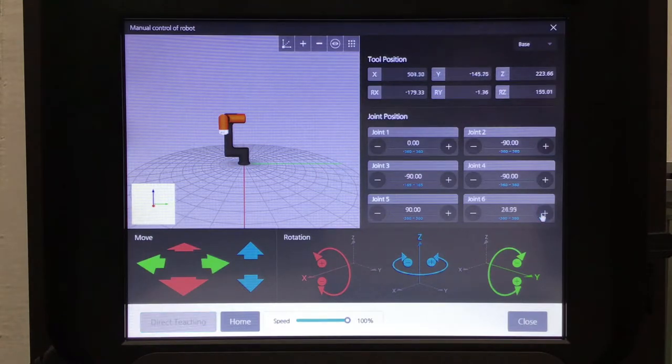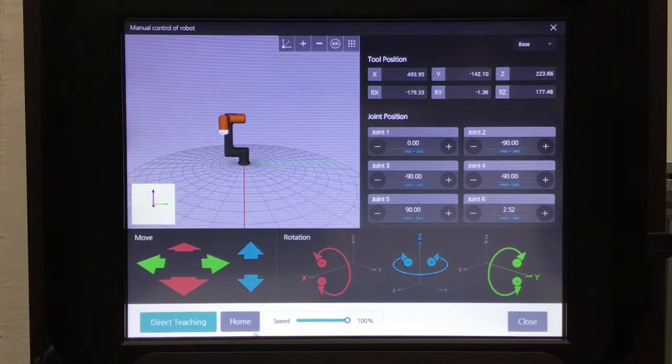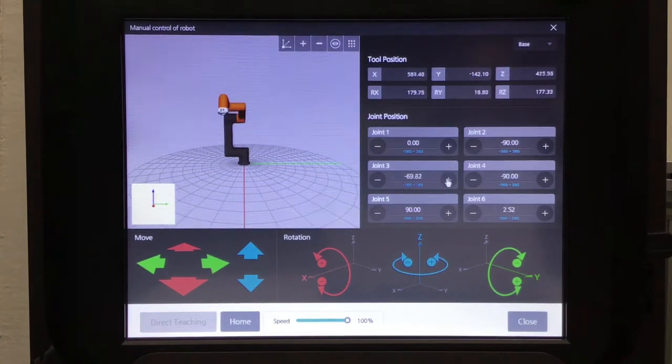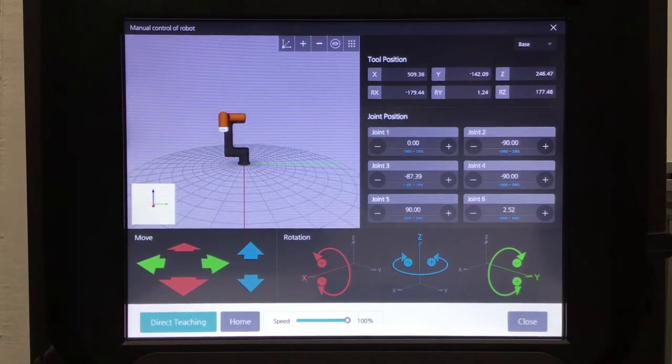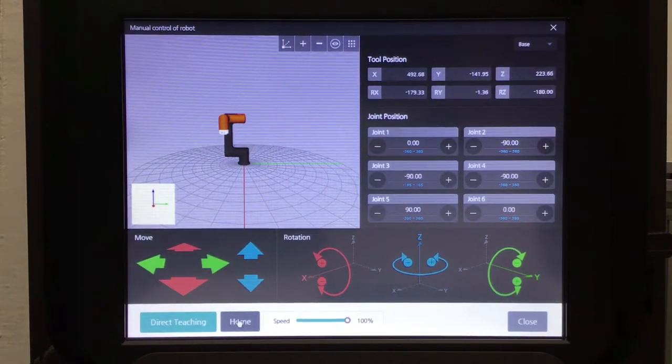You can move just joint six if you feel like it and then it will rotate just the tool flange. Or you can move joint three and then it will rotate the shoulder. It's very easy. Click the home button, bring the robot back to home.